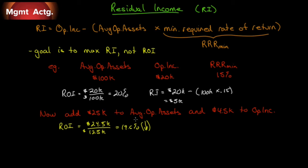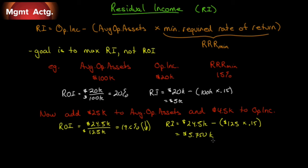But let's look at it from a residual income perspective. We have new income of $24,500, and we need to cover the minimum required rate of return: $125,000 times 15% equals $18,750. So our residual income has increased to $5,750. From an ROI perspective we don't like it, but from a residual income perspective we do — because the goal is to maximize residual income. That gives us a go decision.